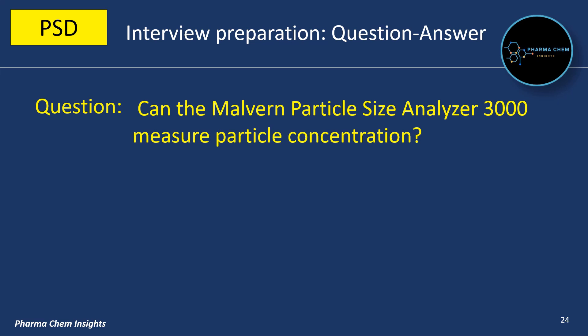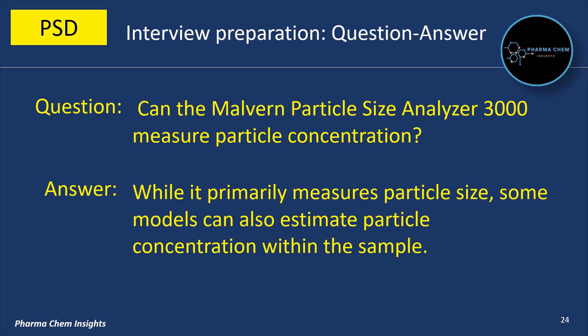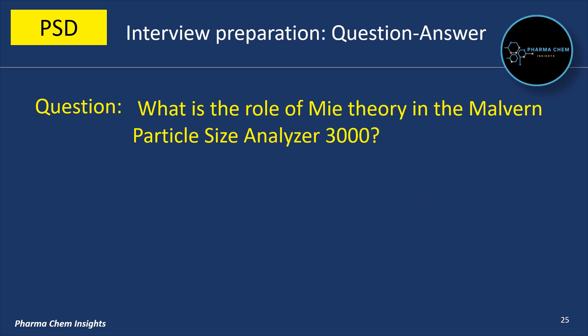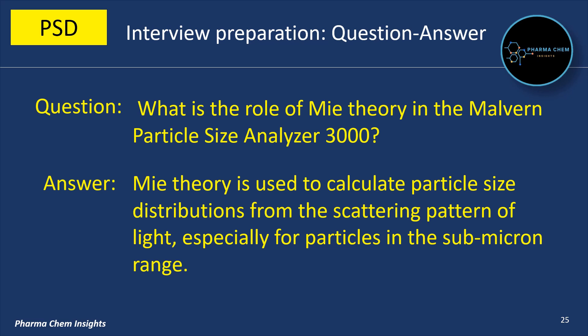Can the Malvern Particle Size Analyzer 3000 measure particle concentration? While it primarily measures particle size, some models can also estimate particle concentration within the sample. What is the role of Mie theory in the Malvern Particle Size Analyzer 3000? Mie theory is used to calculate particle size distributions from the scattering pattern of light, especially for particles in the sub-micron range.